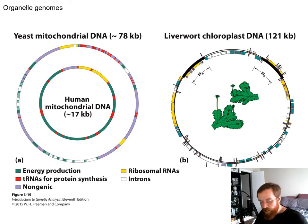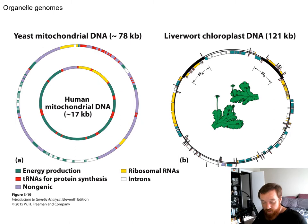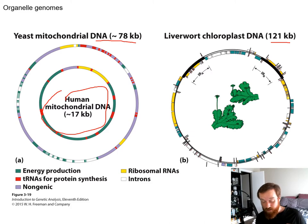These organelles have circular genomes that are very small compared to nuclear chromosomes. Yeast mitochondrial DNA is about 78 kilobases; human mitochondrial DNA is very small at 17 kilobases; and liverwort chloroplast DNA is bigger than both at 121 kilobases. But all of these are tiny compared to the rest of your genome.